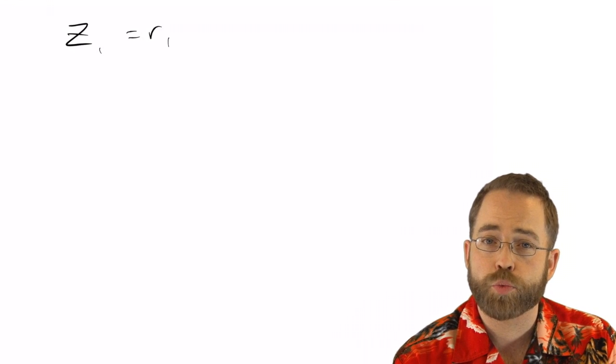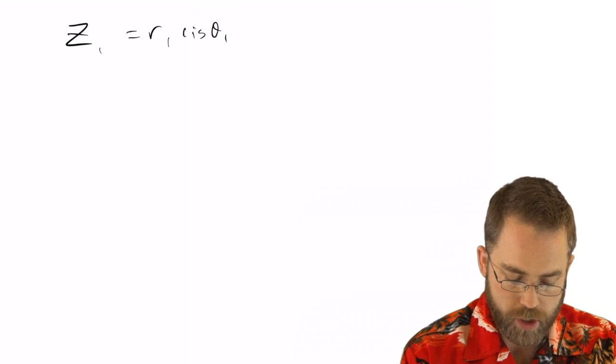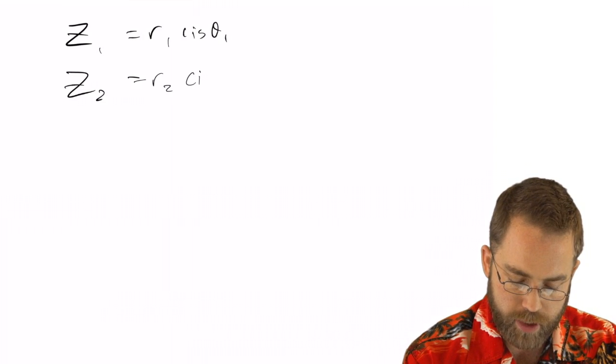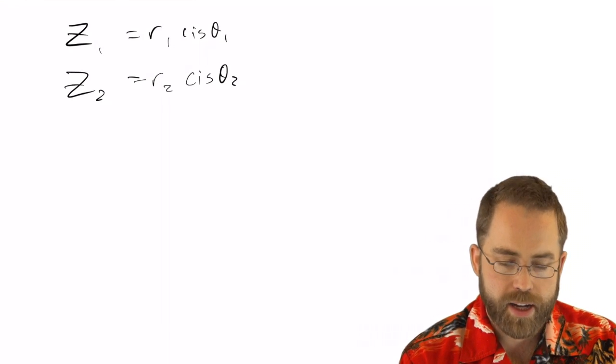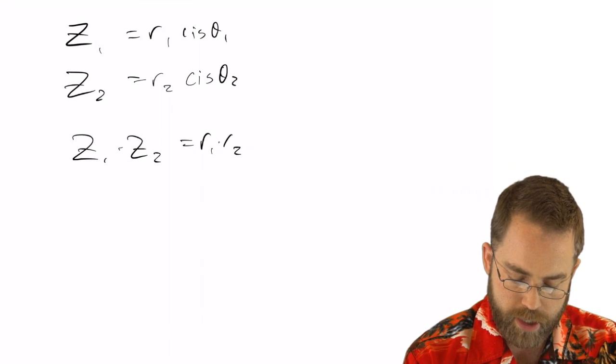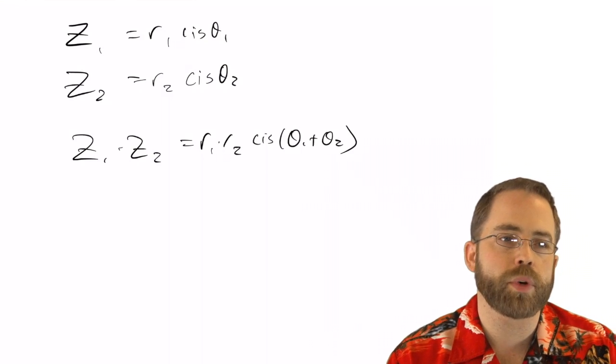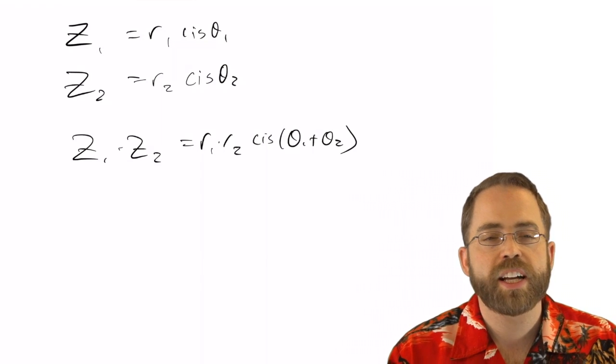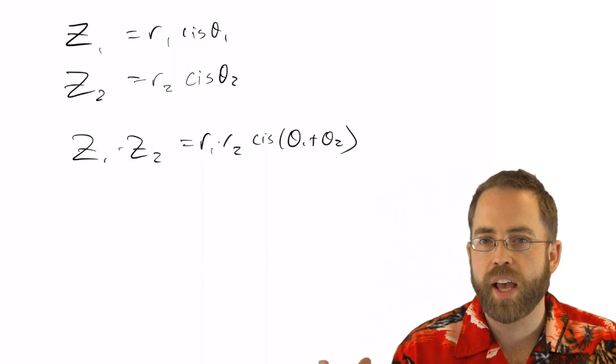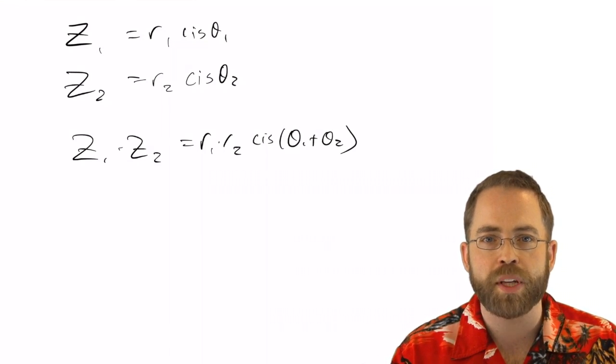And what I proved to you last time was that if you have some complex number z sub one, which has got its particular radius and its particular angle, and then you have some other number z sub two, which has got its own radius and its own angle, that when you multiply these two numbers, all you have to do is multiply their radii and add their angles. And if that wasn't cool enough, which it's pretty darn cool, today we are going to talk about division, exponents, and roots, all of which become geometry when you do them in cis.